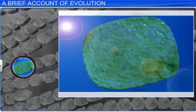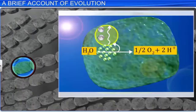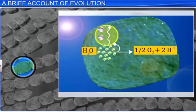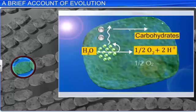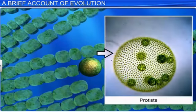During photosynthesis, the sun's energy helps to split water, resulting in the release of electrons that are channelized further by light harvesting pigments. This reaction ends in the formation of carbohydrates and the release of oxygen. Gradually, protists developed and slowly evolved into multicellular life forms.